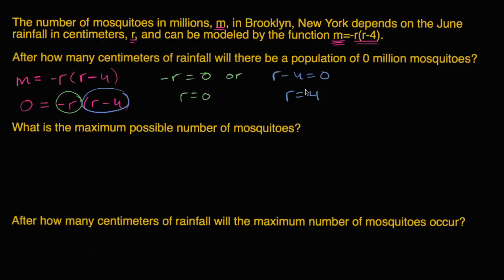Let's think about whether that makes sense as a model for the number of mosquitoes. We always imagine mosquitoes need some standing water, so if you have no rainfall there's not going to be any standing water. And the way this model works, some rain is going to help the mosquitoes breed. But if you have enough rainfall, the water is moving around, overflowing, going into the gutter, making it very hard for mosquitoes to breed.